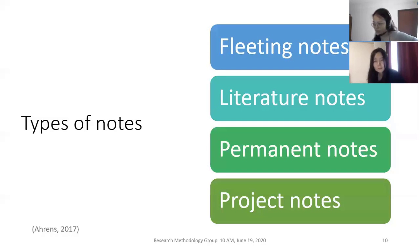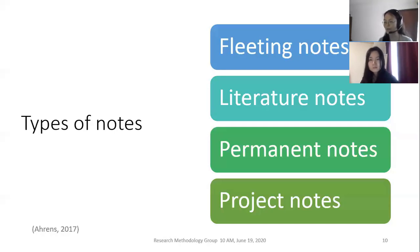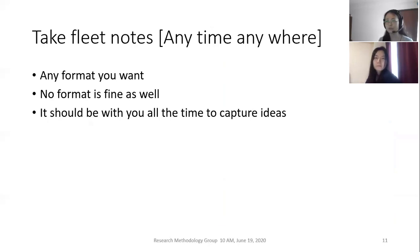The fourth type is project notes — basically related to specific projects that can be archived once the project is finished. Since I only have one project for my postdoc, I probably have just one project notes library. If I have a second project later, I will archive the current one and create a new project notes library. Fleeting notes should be with you all the time — they have no format and as long as you can capture an idea fast, even just one word or one URL link to read later, that's fine. You should not waste any inspiration that enters your mind — capture it with your fleeting notes.